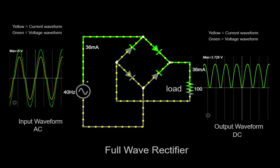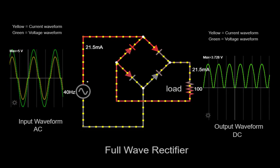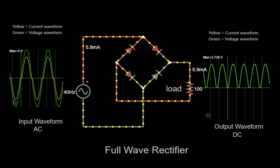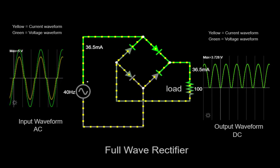Its primary purpose is to rectify the AC input signal, allowing current to flow in only one direction, while blocking the opposite direction.